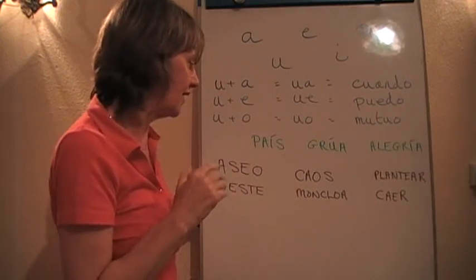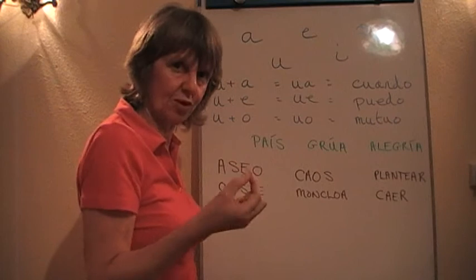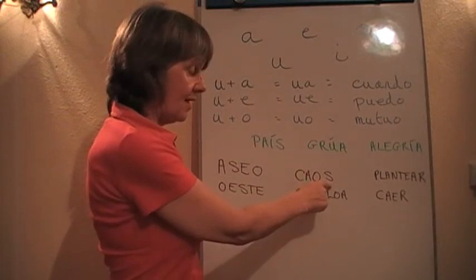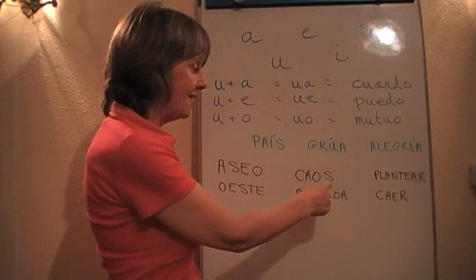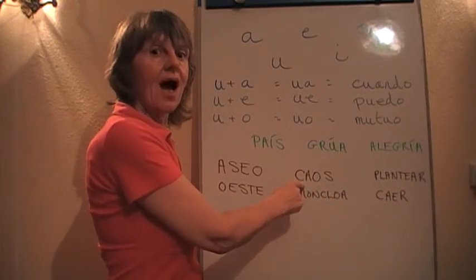Hard one for the English here. We tend to put sounds between vowels. Caos. Let's look at the previous thing about rhythm. Ends in an s. Beat on the last but one syllable. Ca. Caos.